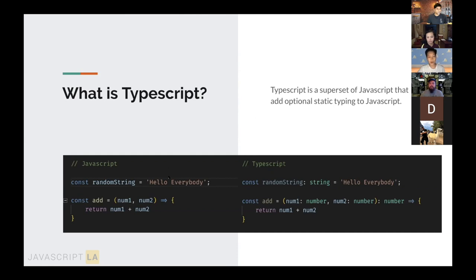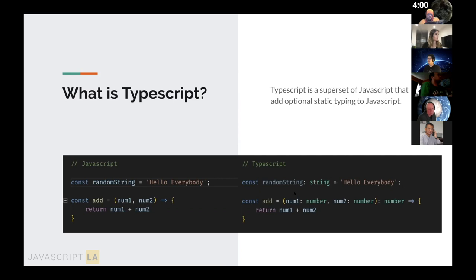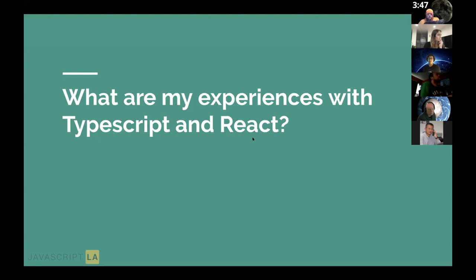In JavaScript, a variable could be a number, string, or object. TypeScript constrains it — if a variable is declared as a string, you can't reassign it to a number. You can also type function parameters, so an 'add' function that only takes two numbers will throw an error if a string is passed in. Rowan first got into TypeScript around September of last year when starting a greenfield project at his company.